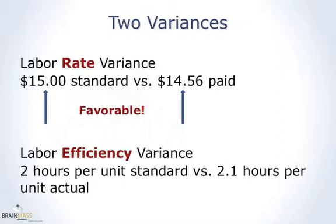Let's look at the efficiency variance. The standard called for taking two hours per unit. On average during the period the workers took 2.1 hours per unit. That's unfavorable — they took longer than the standard. So here we have one variance favorable and one unfavorable.